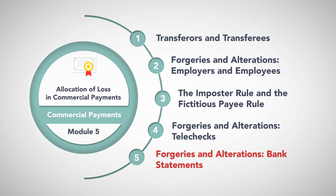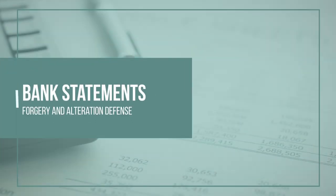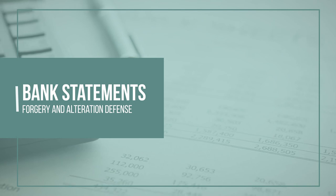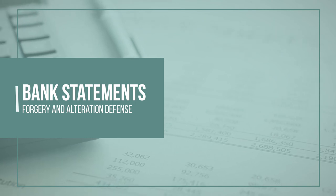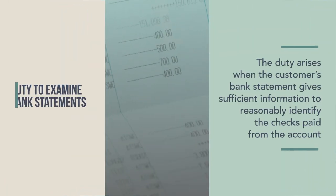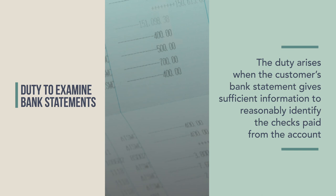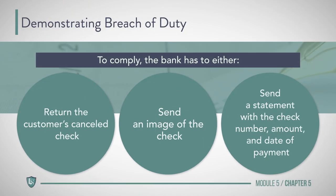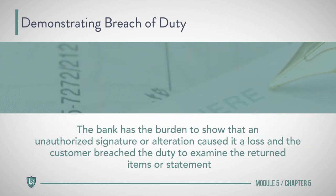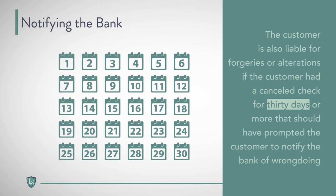Forgeries and Alterations — Bank Statements. The Code imposes a duty upon a bank's customers to examine bank statements, and failure to comply gives banks a defense against claims asserting forgeries and alterations. The duty arises when the bank statement gives sufficient information to reasonably identify the checks paid. To comply, the bank may return cancelled checks, an image of the check, or a statement with the check number, amount, and date of payment. The bank has the burden to show that an unauthorized signature or alteration caused it a loss and that the customer breached the duty to examine returned items. The customer is also liable for forgeries or alterations if the customer had a cancelled check for 30 or more days that should have prompted notification to the bank.